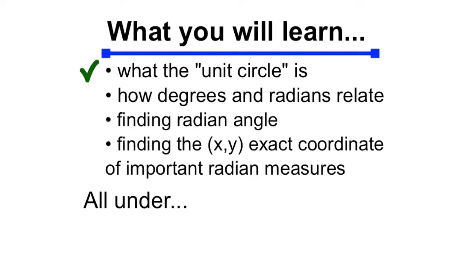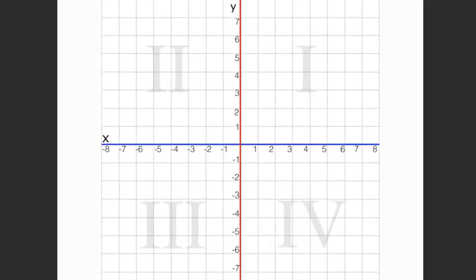So this is what you're going to see. What the unit circle is, how degrees and radians relate, finding radian angles, finding the xy exact coordinates of important radian measures, all under 8 minutes. First, let's talk about what a unit circle is.